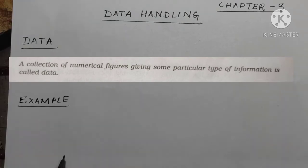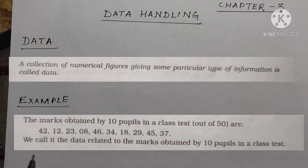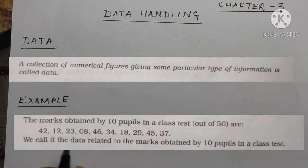For example, the marks obtained by 10 pupils in a test out of 50 are: 40, 2, 12, 23, 8, 46, 34, 18, 29, 45, and 37. This is the data related to the marks obtained by 10 students. By this we collect raw data to form data handling and get some information.